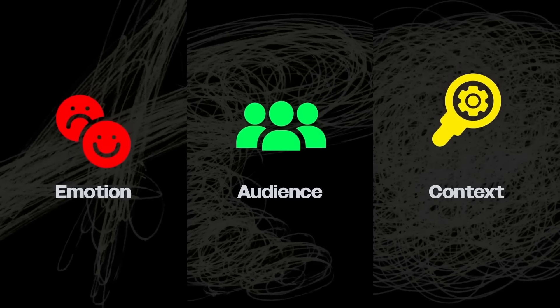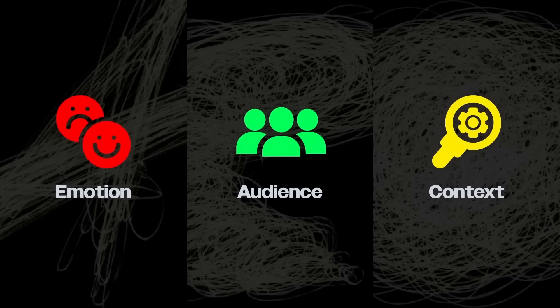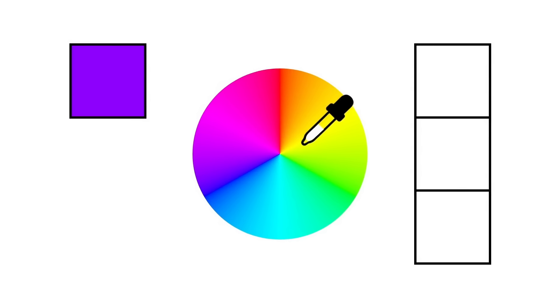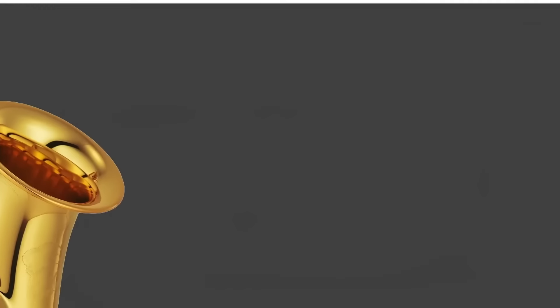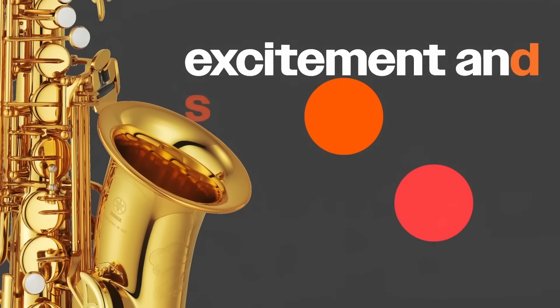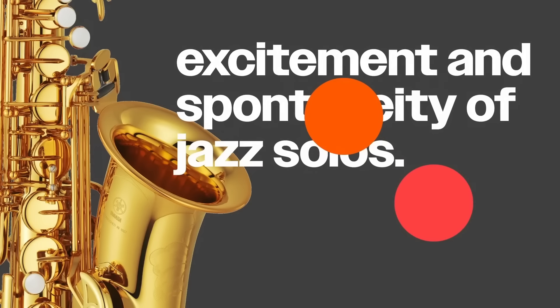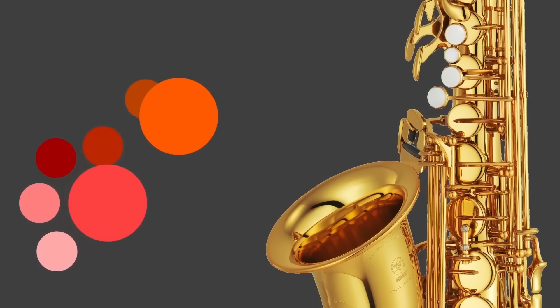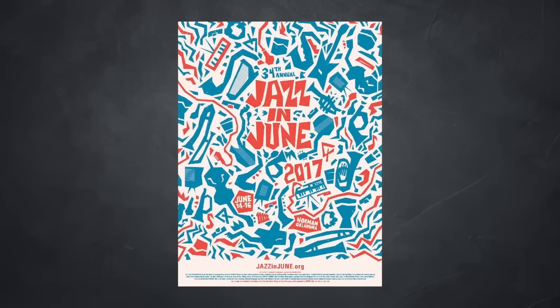Once you have that color language, consider other aspects such as emotion, audience, and context, and start building a color palette. You may want to base this around a base color, adding complementary colors from your associations. Use fiery reds and oranges as accent colors to represent the excitement and spontaneity of jazz solos, and experiment with different shades to create harmonious palettes that create a visual connection to the emotions of jazz.